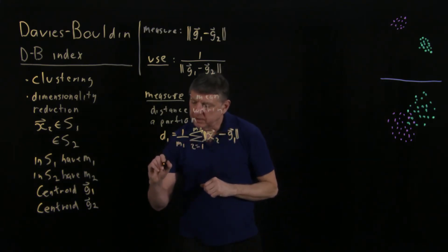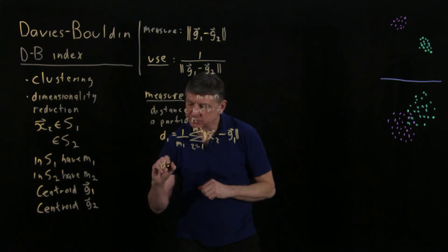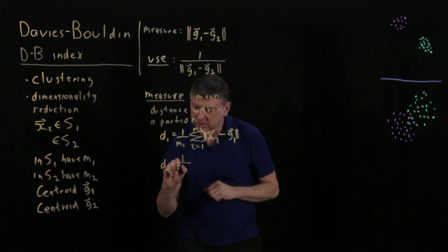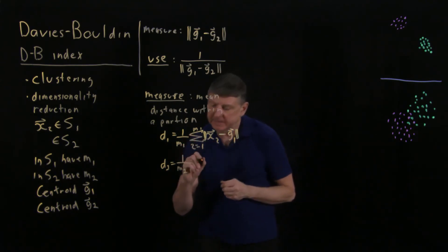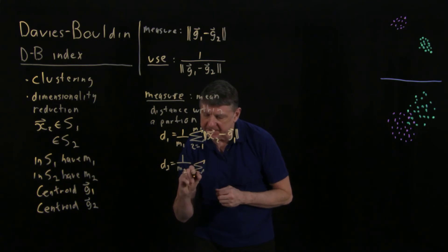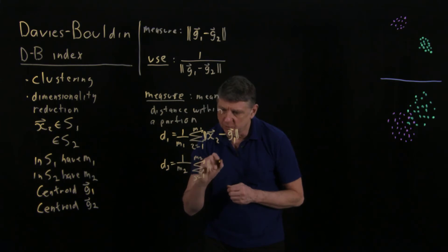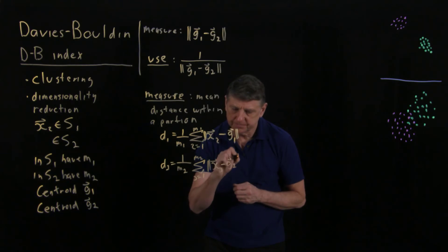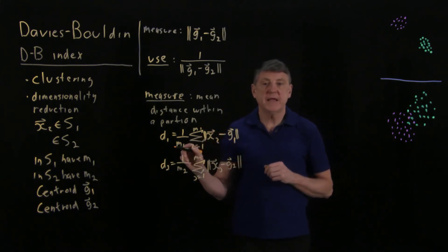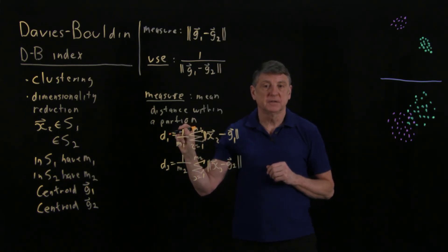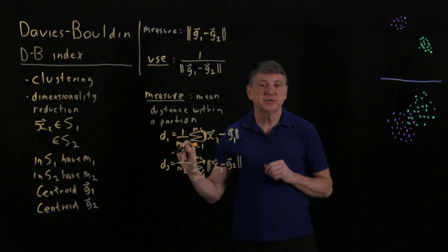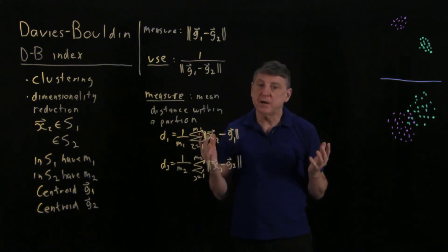Likewise, what we can do is we can say that distance two is one over m2. And just for clarity, I'll use a different loop index or summation index, I'll say the sum as j goes from 1 to m2 of the norm of xj minus g2. And so what I would be able to do is I would be able to measure the dispersion of the first partition and the dispersion of the second partition.